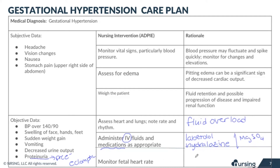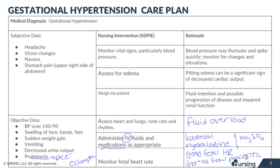We also monitor the fetal heart rate, because a pregnant patient means the baby is our patient too. We need to make sure the baby is tolerating the environment well. If the mom's blood pressure is very high, blood flow through the placenta is decreased, meaning the fetus isn't getting the oxygen and nutrients it needs — this shows up in the fetal heart rate. If the fetal heart rate starts looking concerning, it indicates poor placental blood flow, and we may need to deliver if we're close to that point in the pregnancy.